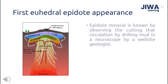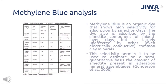The first euhedral epidote, on the other hand, is found by observing the cutting circulated by drilling mud via microscope by a well-side geologist. It can also be used to signify high temperature and permeable zones, which are commonly found in reservoir zones. Methylene blue is an organic dye that shows higher selectivity for adsorption by smectite clays. The dye is also absorbed by smectite components of mixed-layer clays, but is largely unaffected by other, even electrically conductive, common clay minerals. This selectivity permits it to be used to estimate, on a semi-quantitative basis, the amount of smectite present in alteration mineral assemblages.